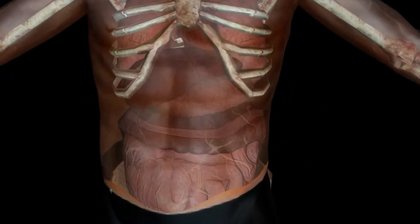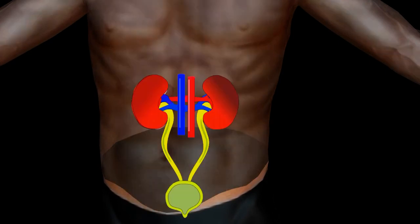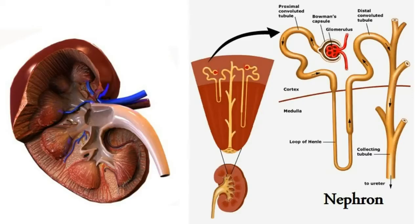Kidneys are a pair of reddish bean-shaped organs. Blood collects waste from all over the body, and when that blood flows through the kidneys, the kidneys collect this waste from the blood and produce urine. More than 95% of urine is just water. Kidneys are made of small nephrons which filter blood.